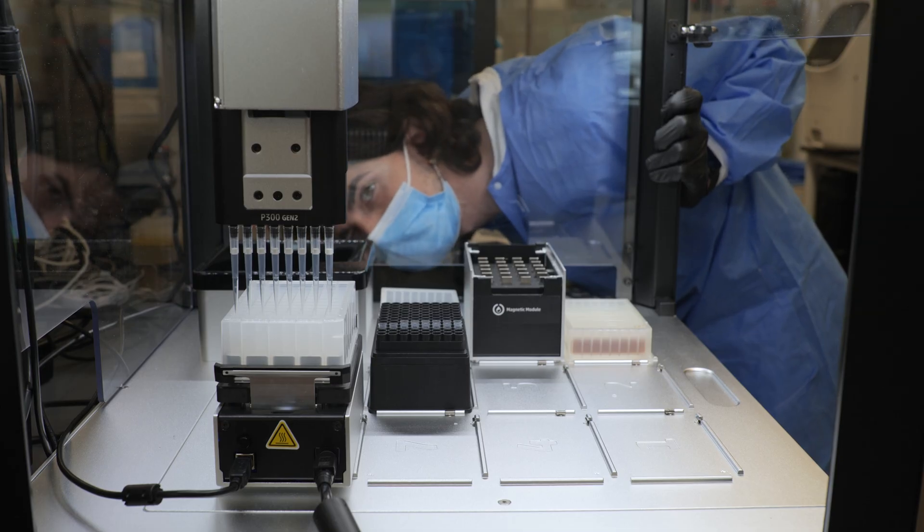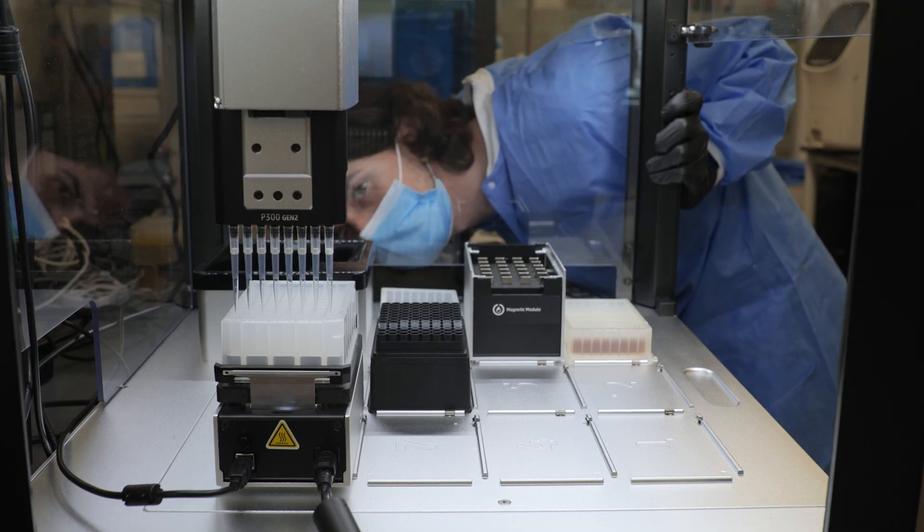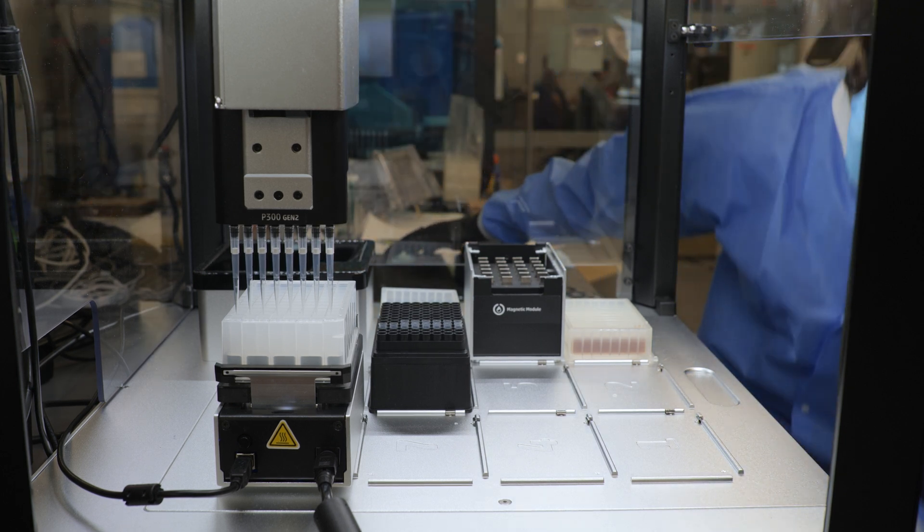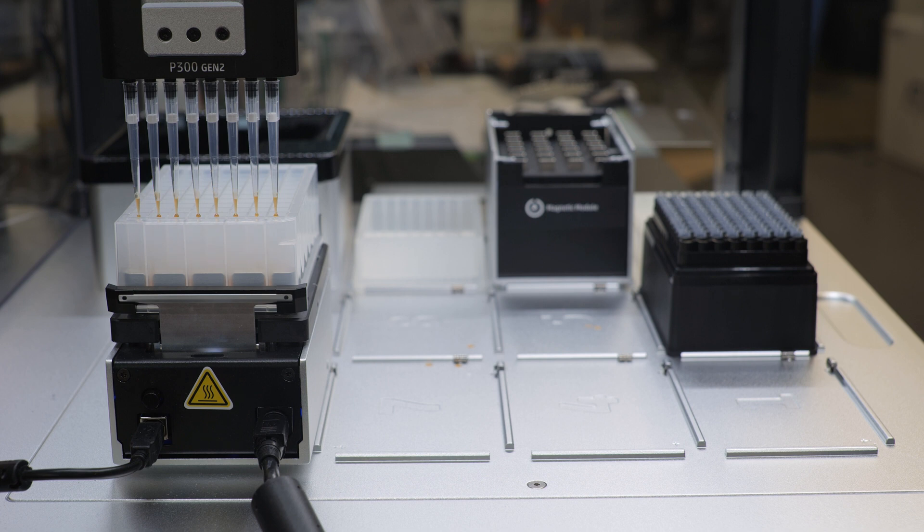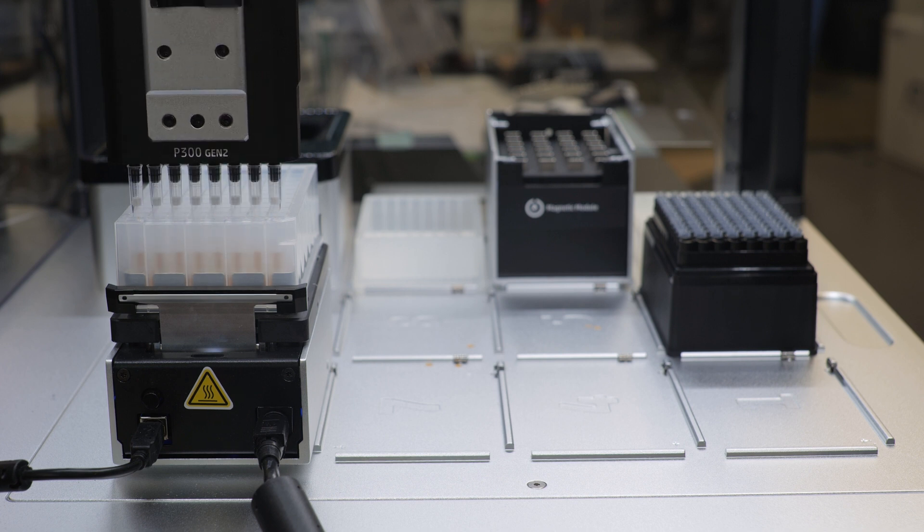Calibrating your Heater Shaker module is similar to any other Opentron's labware setup. You simply adjust the robot's positioning and save it for the first well in a piece of labware, and then it knows where all the other wells are.